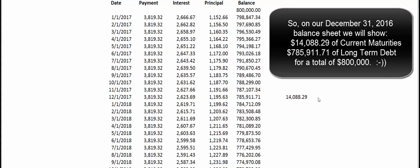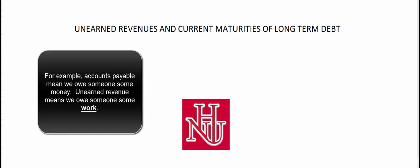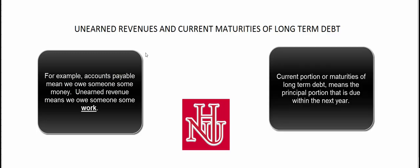Those principal payments total $14,088.29, which is the current portion of long-term debt on our balance sheet. The remaining $785,911.71 is the long-term portion. To summarize: unearned revenue means somebody pays us in advance — debit cash, credit unearned revenue — and as we earn it, we reduce that liability and credit the revenue account. Current maturities of long-term debt means looking at our mortgage or long-term debt instrument and identifying the principal payments due in the next year as the current portion. That's all there is to it.